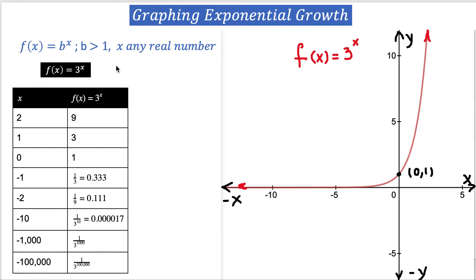Let's take one example of exponential growth: f(x) = 3^x. How can we graph it? First of all, x is the independent variable. We can take some values near the origin — we'll use x = 2, 1, 0, -1, and -2. Those are enough points to sketch the graph of the exponential function.